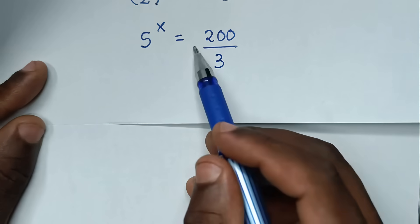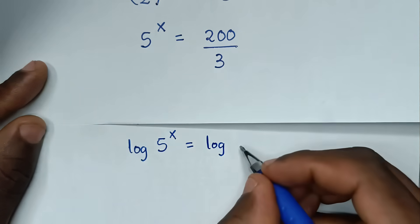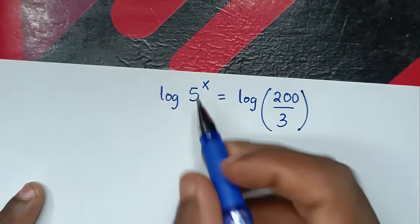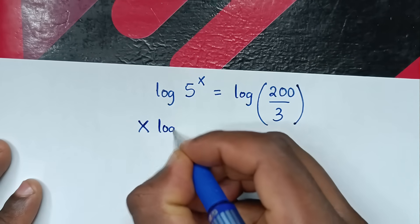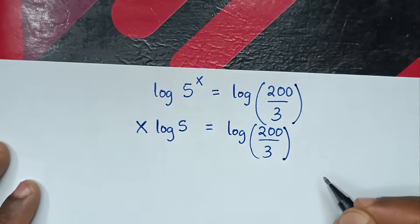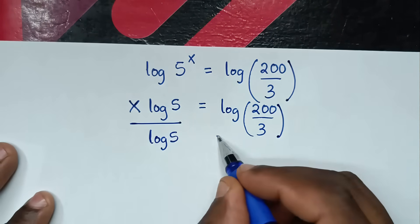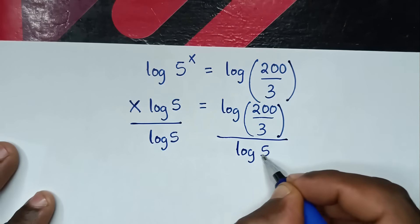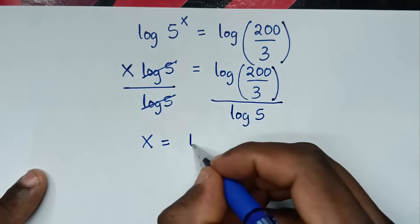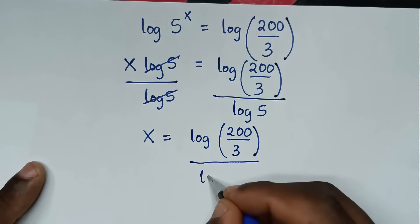Then in the next step, we'll apply log in both sides, so it will be log of 5 power x is equal to log of 200 over 3. Into here, this power of x will move to the front, so it will be x log of 5 is equal to log of 200 over 3. We'll divide both sides by log of 5, and log of 5 will cancel, giving x is equal to log of (200 over 3) over log of 5.